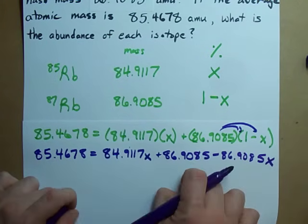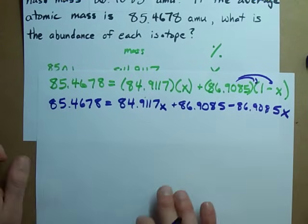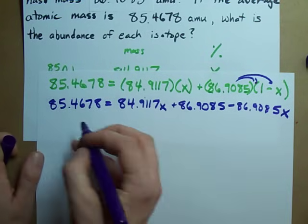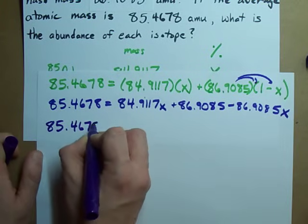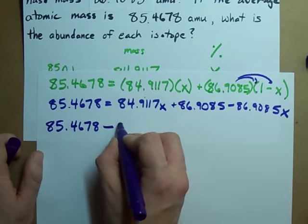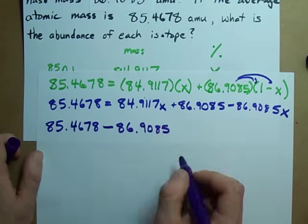So I get 86.9085 minus 86.9085 X. The way you solve a linear equation like this is to move all the X's to one side, all of the numbers to the other. Looks to me like it's going to be easier to keep the X's on the right. So I'm going to put the numbers on the left. That's a number.